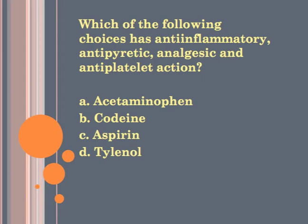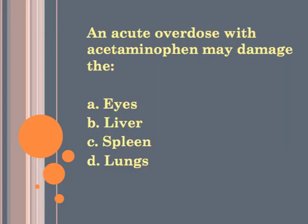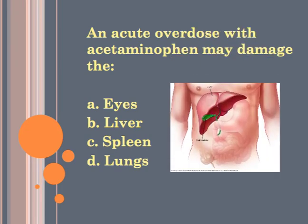Quick question: which of the following has anti-inflammatory, antipyretic, analgesic, and antiplatelet action? The answer is C — aspirin. Which is best to use in pediatric patients for both analgesic and antipyretic action? That would be B — acetaminophen. An acute overdose of acetaminophen may damage the — answer B — liver.